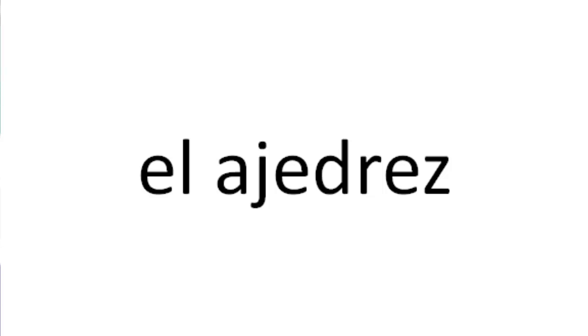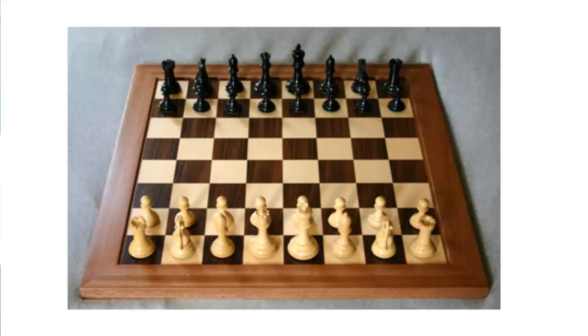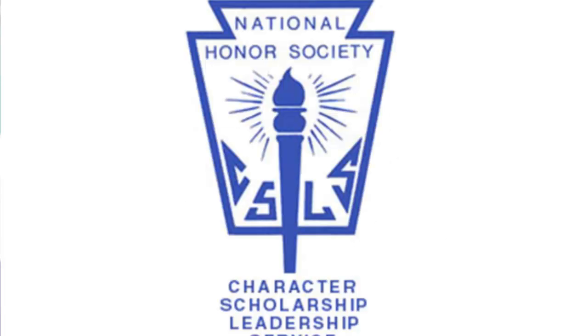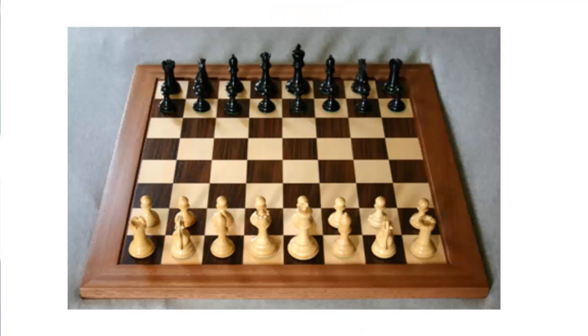Repite: el ajedrez. Here's ajedrez. Now, el club — los clubes. Tenemos este club en la escuela. Tenemos también el club de ajedrez. Muchos clubes. Remember, when a word ends in a consonant and we want to make it plural, we add -es to the end. So, el club — los clubes.